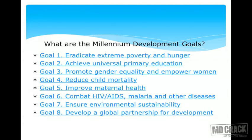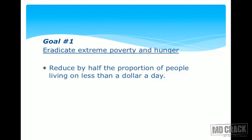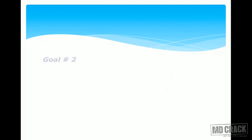There are 8 MDGs (Goal 1 to Goal 8). Goal 1: Eradicate extreme poverty and hunger — reduce by half the proportion of people living on less than a dollar per day, and reduce by half the proportion of people who suffer from hunger. This is extremely important to remember as an MDG.